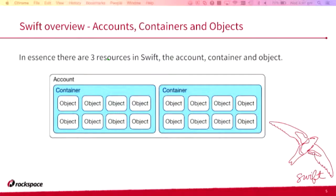Conceptually Swift has three resources: the account, the container, and the object. Accounts contain a list of all containers within that account plus metadata — ACLs, account-level metadata, whatever. The container is almost identical but stores a list of objects and any metadata or ACLs. And then you have objects distributed across the cluster, with metadata stored alongside them.